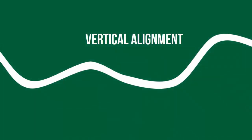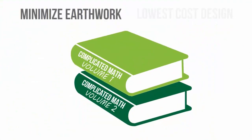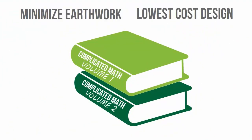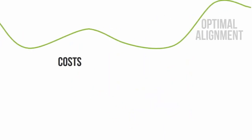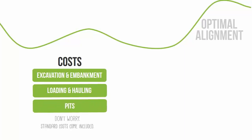Softree Optimal optimizes the vertical alignment of a road, using complex mathematics to minimize earthwork and determine the lowest cost alignment. It determines the optimal alignment based on unit cost, design parameters, and constraints.